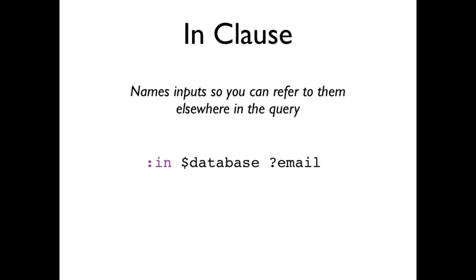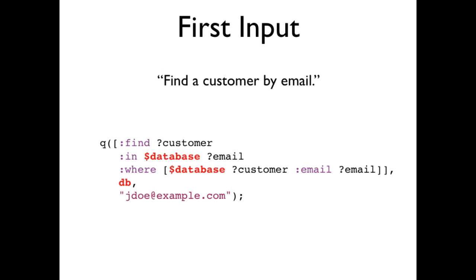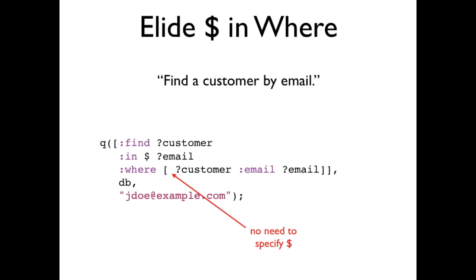The in clause lets you name multiple inputs, matching the order they appear in calls to Q. Data source names begin with a dollar sign. The in clause shown here has one data source input and one variable input. One common use for additional inputs is parameterized query. In this example, the first input is named database. Note that you now have more than one input, so you must prefix the data pattern in the where clause with the input name. The second input is a parameter to the query, in this case the email of a customer you're searching for. Naming the database can become tedious, especially since many queries will take only one database argument. So you may want to use the shortest name possible, the dollar sign. The dollar sign is the default data source for a query pattern and can be omitted entirely. This makes it easy to write single data source queries without compromising the generality of the query model.